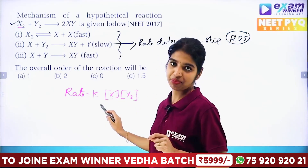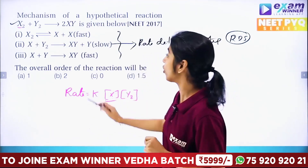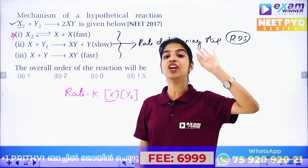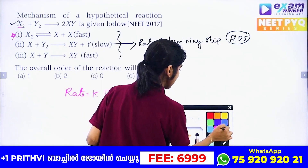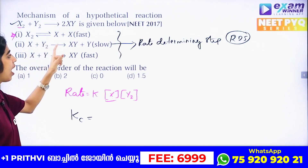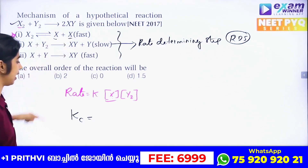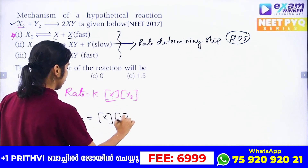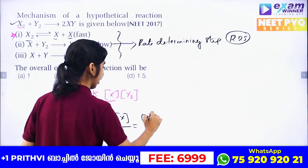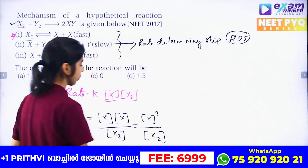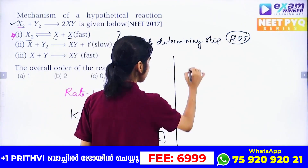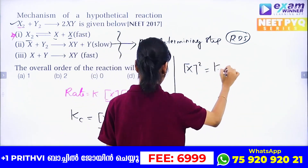We apply an equilibrium condition to the first step. The equilibrium constant Kc in terms of concentration equals the product concentration divided by the reactant concentration, so Kc = [X]² / [X₂]. Therefore, [X]² = Kc × [X₂], and taking the square root gives [X] = Kc^(1/2) × [X₂]^(1/2).